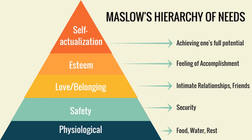Then we move up the triangle to esteem — so feeling accomplished, being independent and achieving. And then from those four we move to the top one, which is self-actualisation, which is achieving one's full potential. You could say starting from the bottom, having a goal, and then actually achieving that goal at the top so that you feel you've achieved your full potential.